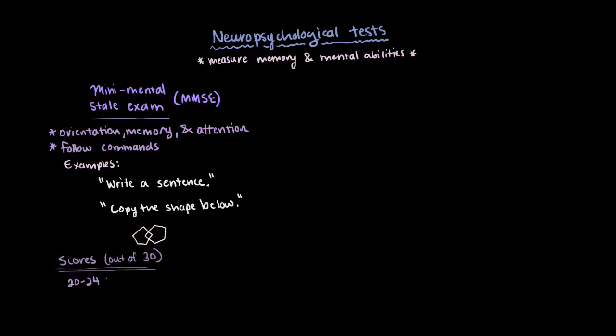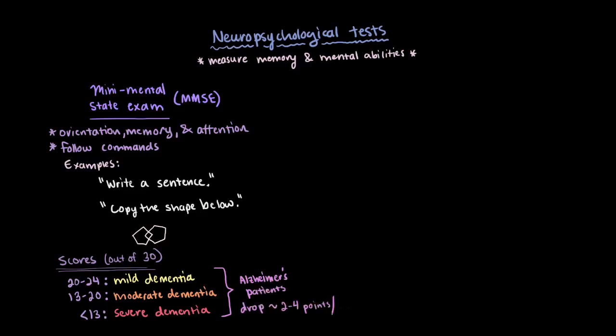Scores of about 20 to 24 suggest mild dementia, 13 to 20 suggest moderate dementia, and less than 13 would suggest a severe case of dementia. And typically, patients with Alzheimer's disease tend to drop 2 to 4 points on average every year.